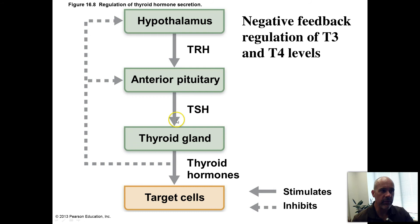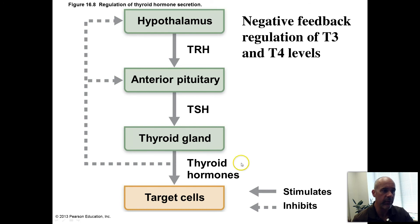TSH travels through the bloodstream. Its target is the follicular cells of the thyroid gland — the ones that produce T3 and T4, those thyroid hormones. TSH stimulates production of T3 and T4.